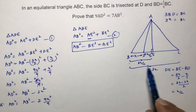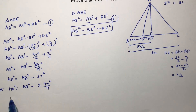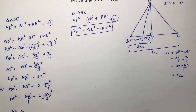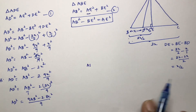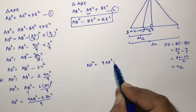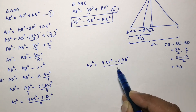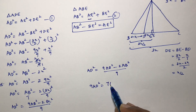We write X² as 9X²/9 because the total BC is 3X, so 9X² can be written as (3X)² which equals BC². So AD² equals AB² minus 2BC²/9. Since in an equilateral triangle BC equals AB, we substitute BC² with AB²: AD² equals AB² minus 2AB²/9. Multiplying through by 9 gives 9AD² equals 9AB² minus 2AB², which is 7AB².